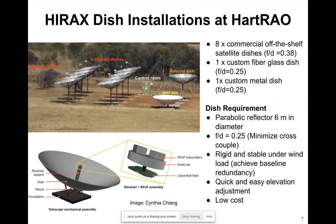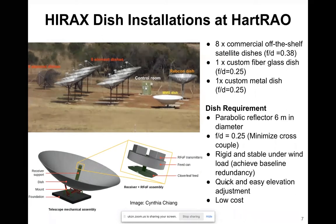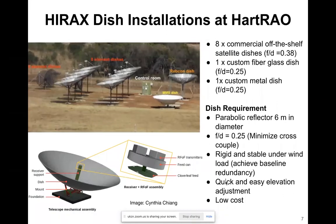We want a dish that is quite rigid so that we can achieve a high level of baseline redundancy. The dish should also be quick and easy to move around — something that can be done by an individual — since we'll be having around a thousand of these dishes, so we may be limited in terms of manpower. The dish should therefore be cost efficient.